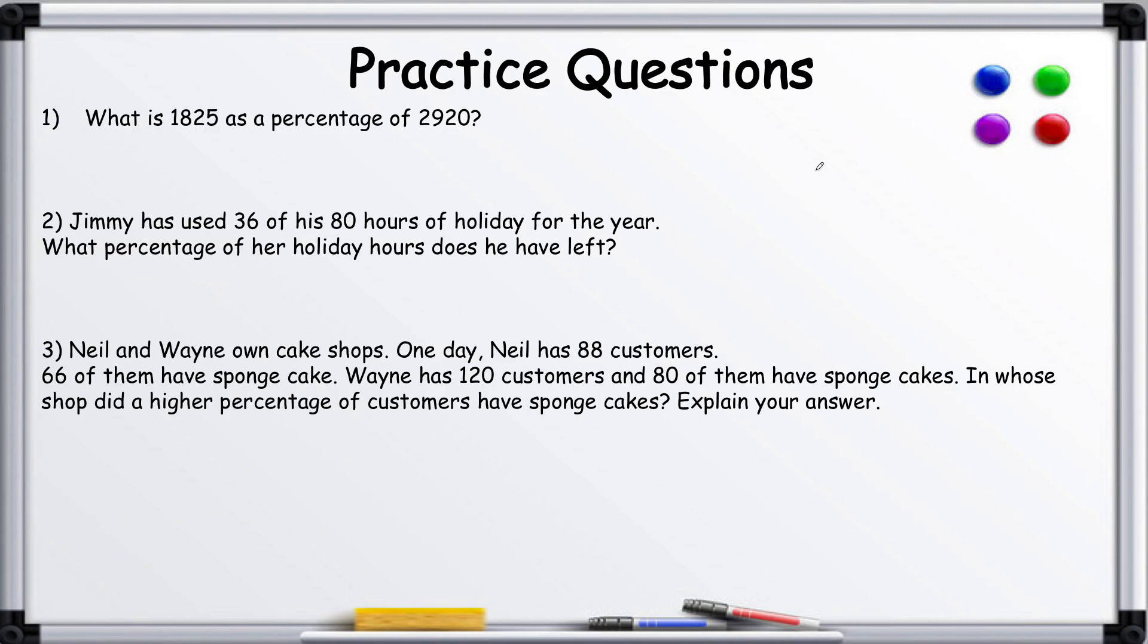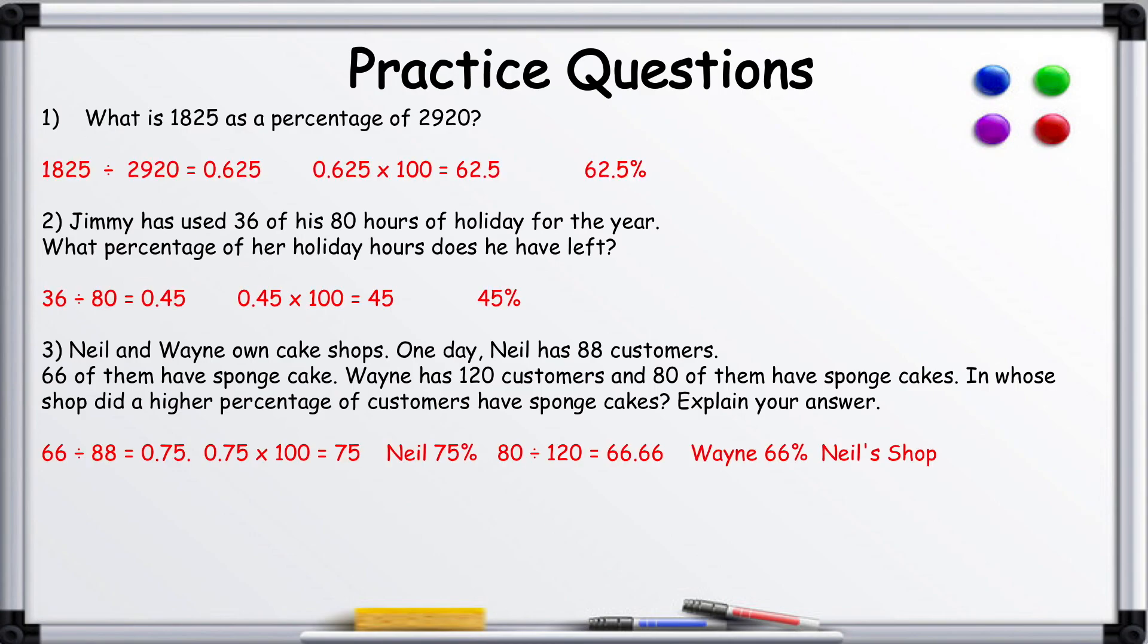Here are some practice questions. Pause the video now. And here are your answers. So what we have to remember is we divide this number by this number, as you can see here, and that will give you a decimal. Then you just multiply it by 100 to get your percentage.